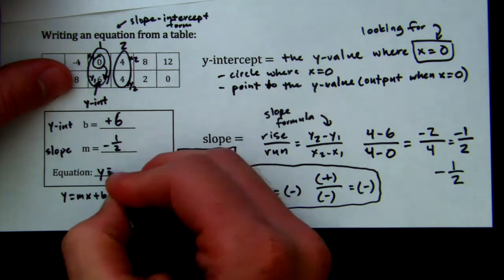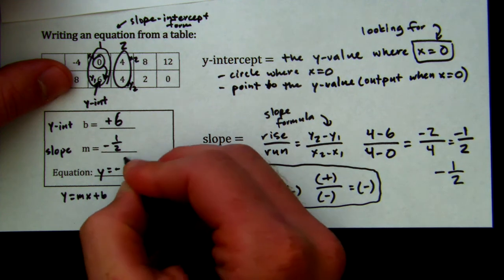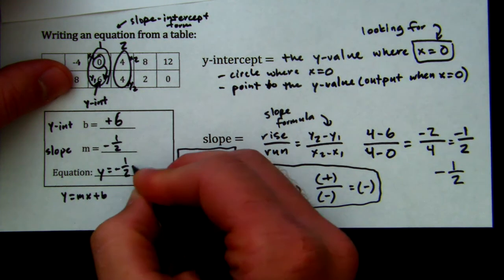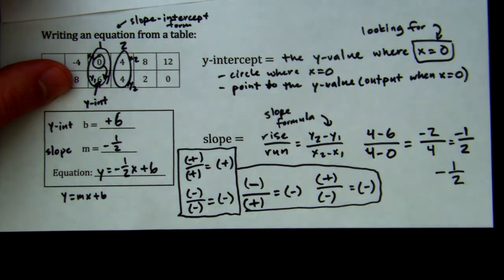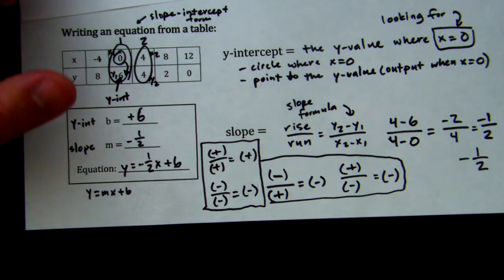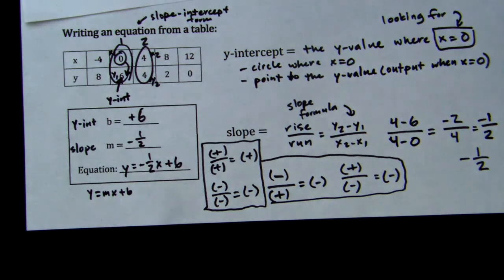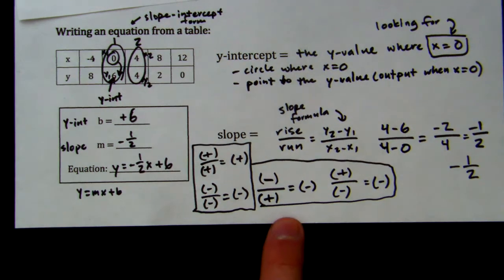So, to write my equation, I'm plugging in here: y equals negative 1 over 2x plus 6. And remember, when you insert that into the Google form, no spaces, no capitals, just follow the directions. Rewind that if you need to for any extra help.